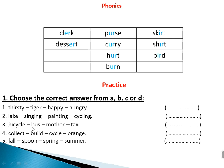Number three: bicycle, bus, mother, taxi. All of them are means of transport except 'mother'. You can replace it with 'car'.